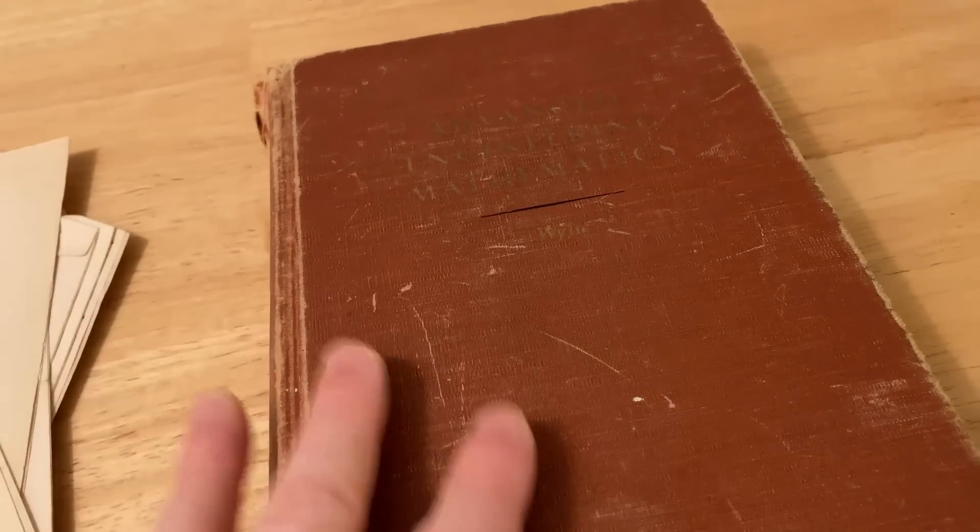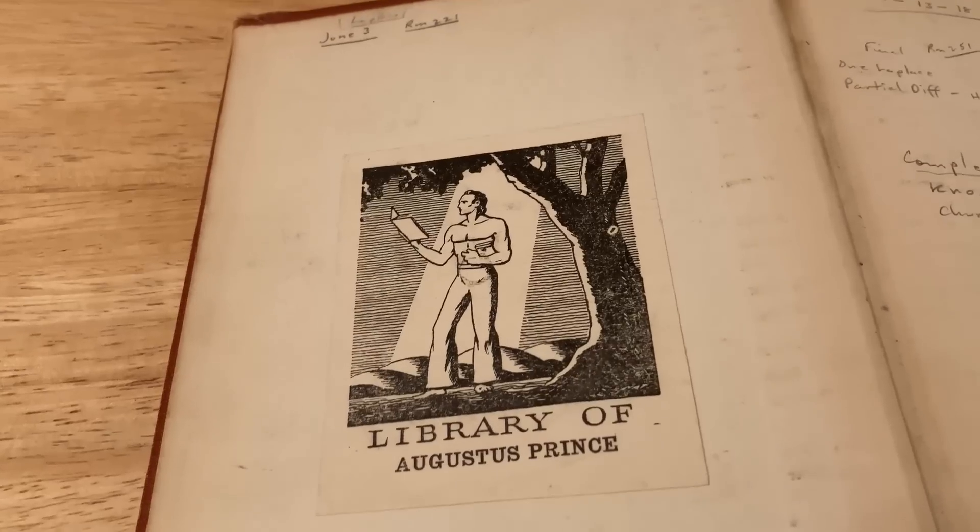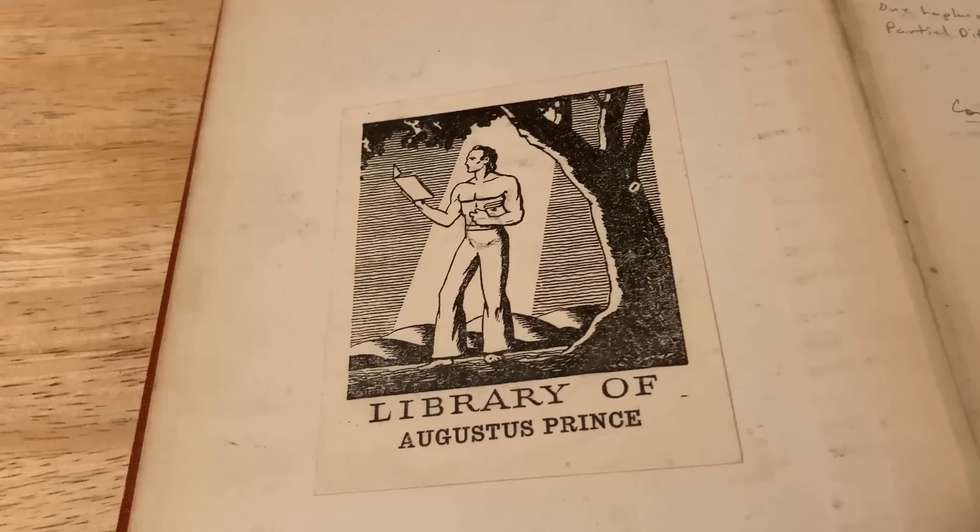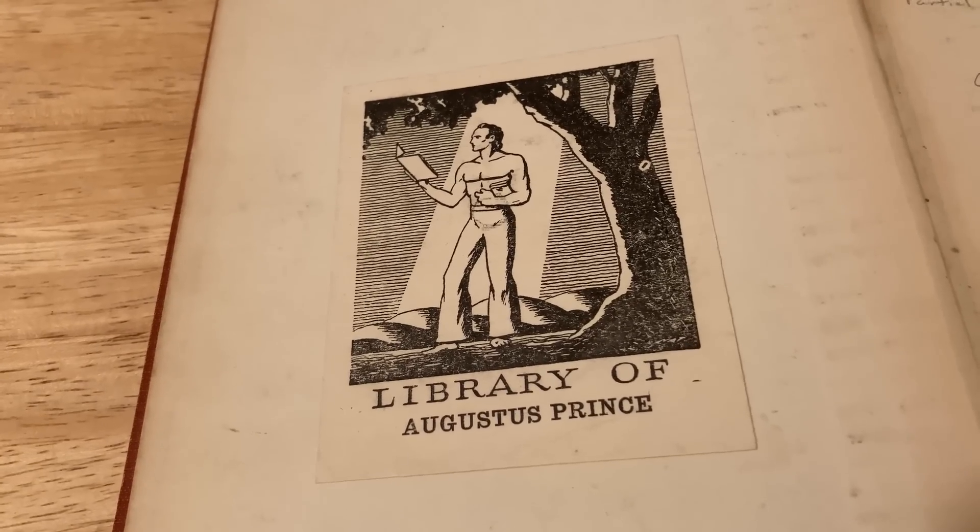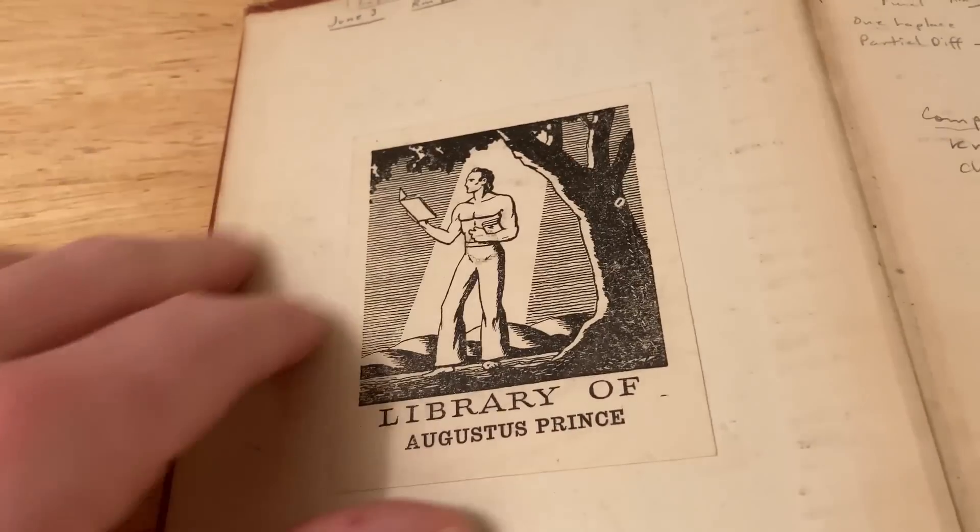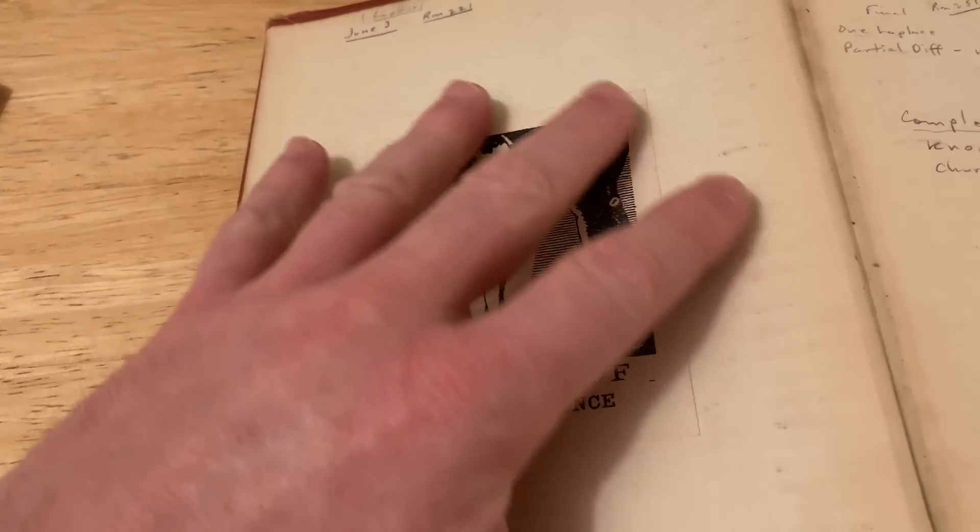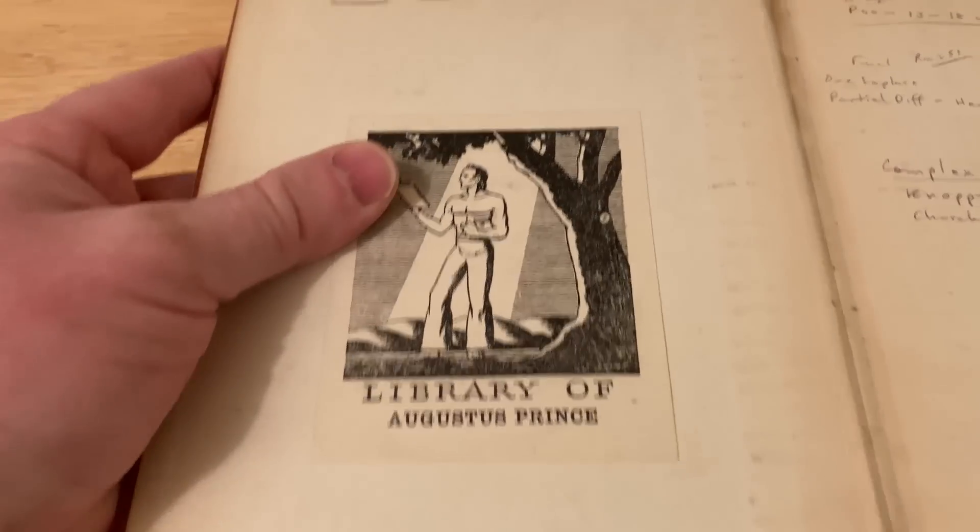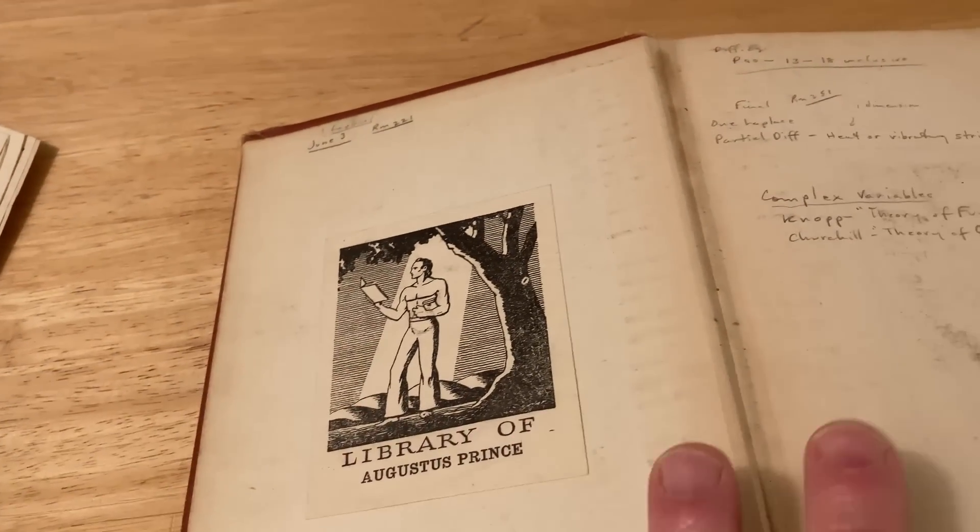Let's open up this book and take a look inside. This is the inside cover and you see here it says Library of Augustus Prince. I have several of his books and they all have this stamp inside them. This is the first book that I have ever reviewed that belongs to Augustus Prince.